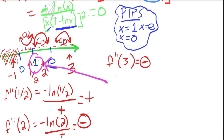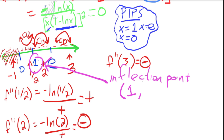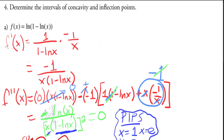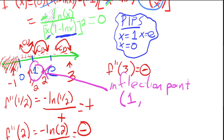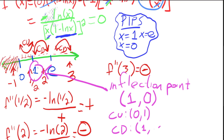So x equals 1 is an inflection point. Plugging 1 into the original function: ln of 1 is 0, so we get ln of (1 minus 0) equals ln(1) equals 0. So the inflection point is at (1, 0). The intervals of concavity are: concave up from 0 to 1, and concave down from 1 to infinity.